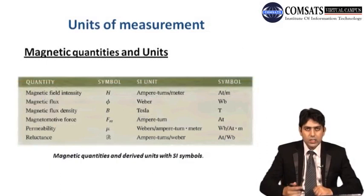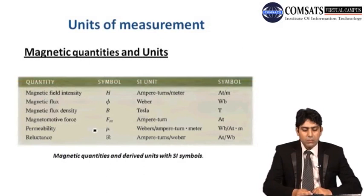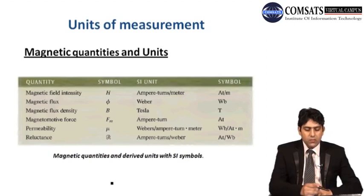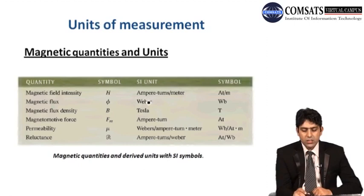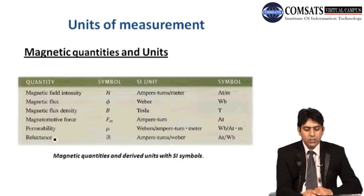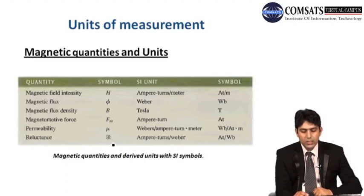As mentioned earlier about electrical quantities, you can also see the magnetic quantities and their units in the table. For example, magnetic field intensity has symbol H and its unit is ampere per meter. Similarly, there is a list with corresponding quantities, their symbols, and their units.